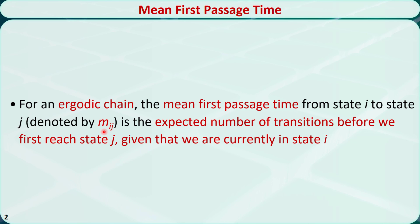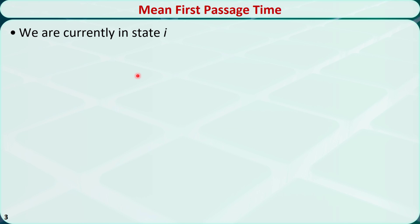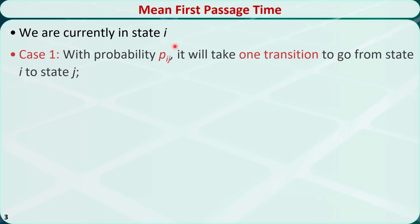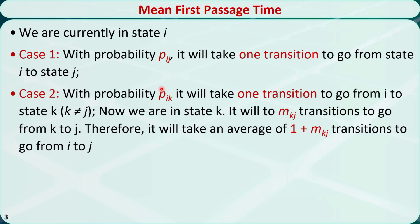We can use the following recursive method to calculate the mean first passage time. Assume that we are currently in state i. We can reach state j via two ways. The first way is we go directly from state i to state j in one transition — the probability is pij. Alternatively, we can also go to a state k, which is not state j, with probability pik.